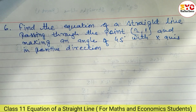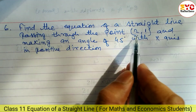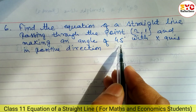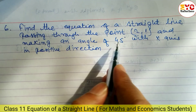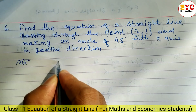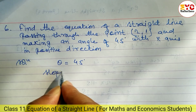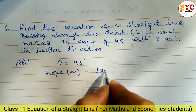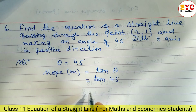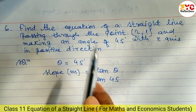Now look at question number 6: find the equation of a straight line passing through the point (2, 1) and making an angle of 45° with the x-axis in the positive direction. The value of theta is 45°. First we find slope: m = tan(theta) = tan(45°) = 1.